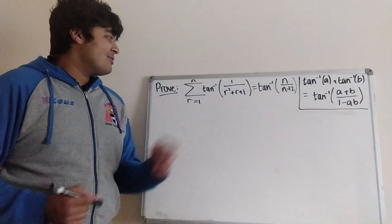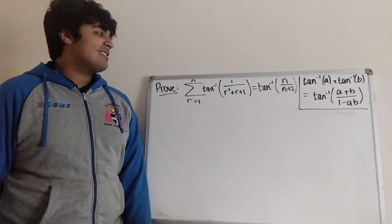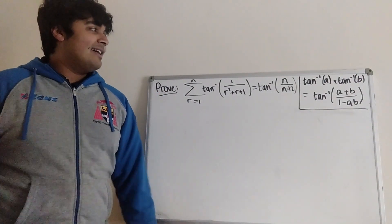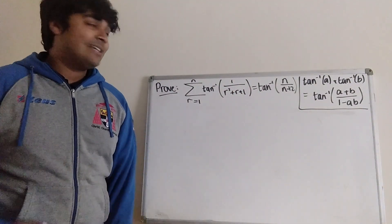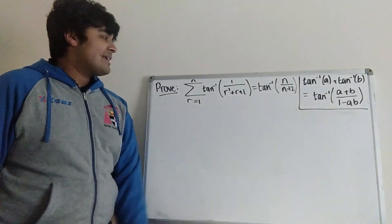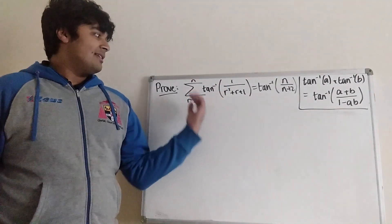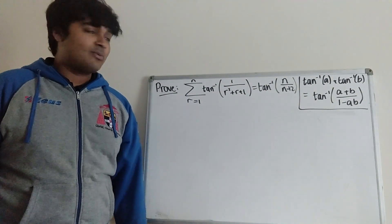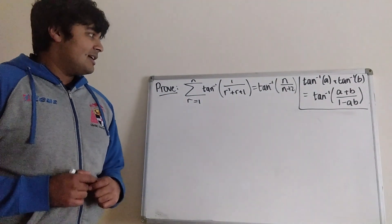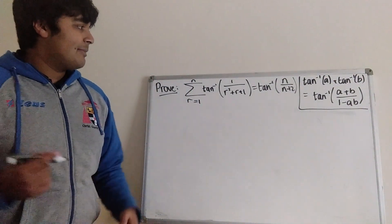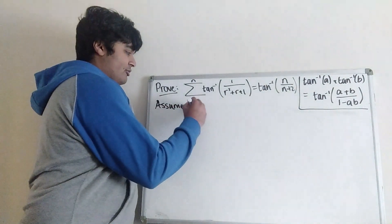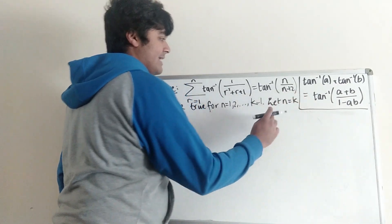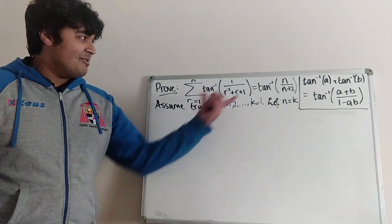Let's move on to the second part. We want to prove that the sum from r equals 1 to n of inverse tangent of 1 over (r squared plus r plus 1) equals inverse tangent of n over (n plus 2). The most intuitive way to prove this is by induction. For the base case when n equals 1, the left-hand side is inverse tangent of 1 over (1 plus 1 plus 1), which is inverse tangent of a third. Plugging n equals 1 into the right-hand side gives 1 over (1 plus 2), also inverse tangent of a third. So the formula holds for n equals 1. Now assume it holds true for n equals 1 up to k minus 1. We let n equal k.